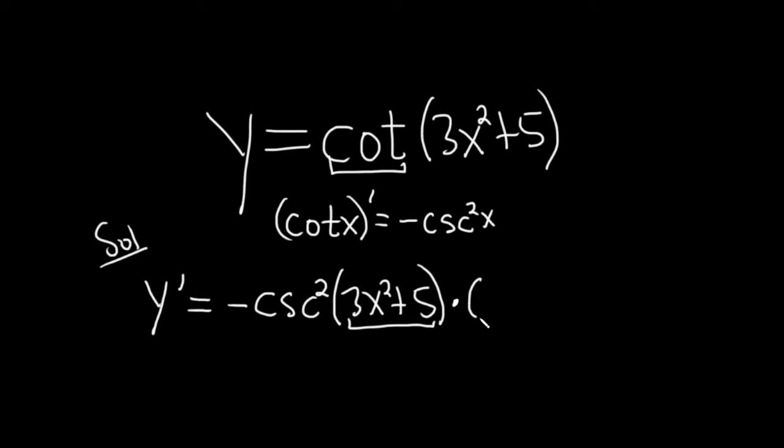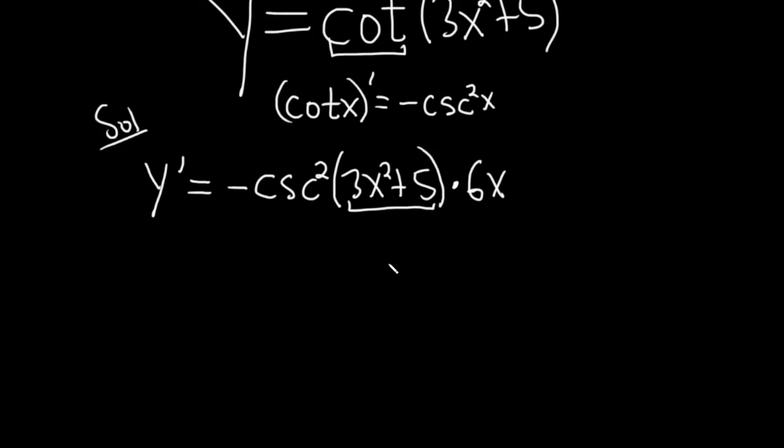2 times 3 is 6, so you get 6x, and then you subtract 1. It's really to the first power, so you don't write it. Plus the derivative of 5, which is 0, so we don't have to write that either. That's pretty much it. Now we can put the 6x in the front.